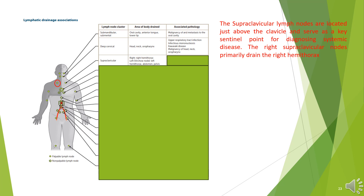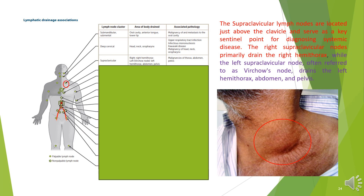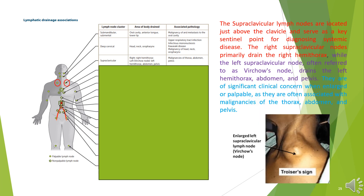The supraclavicular lymph nodes are located just above the clavicle and serve as a key sentinel point for diagnosing systemic disease. The right supraclavicular nodes primarily drain the right hemithorax. The left supraclavicular node, often referred to as Virchow's node, drains the left hemithorax, abdomen, and pelvis. They are often associated with malignancies of the thorax, abdomen, and pelvis when enlarged.